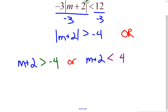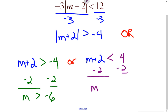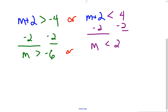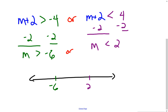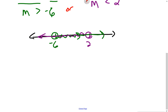Now we solve these two equations. My first one: subtract 2 from both sides — m is greater than negative 6. In the other one: subtract 2 from both sides — m is less than 2. Graphically, negative 6 is here and positive 2 is out to the right. M greater than negative 6 goes right, and m less than 2 goes left. The entire number line is covered. Since we have an OR, the final answer is all real numbers.